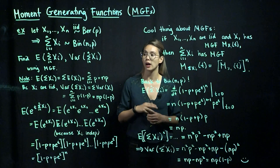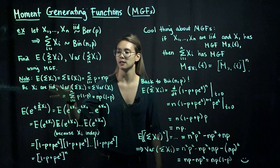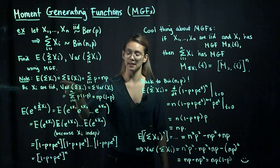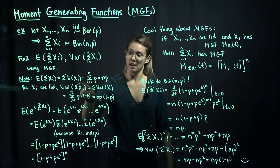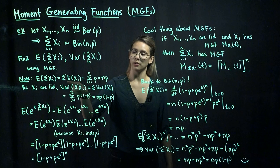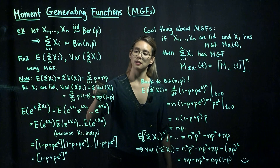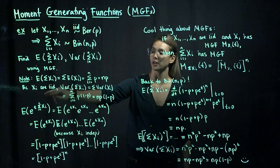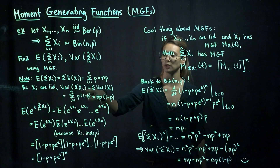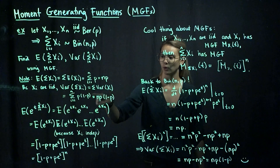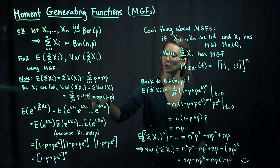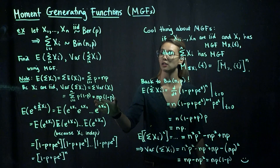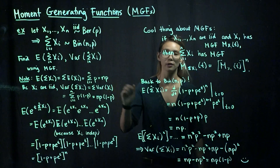We already know how to calculate the expected value and the variance, so let's review that. The expected value of the sum of Bernoulli random variables is the same as the sum of the expectations. We're adding this up n times, and we know that the expected value of a Bernoulli is p, so we get n times p. When our random variables are iid, the variance of the sum equals the sum of the variances, and the variance of a Bernoulli is p times (1 minus p), so we get n times p times (1 minus p). This is where we're trying to get using MGFs — we'll use this to check our work later.